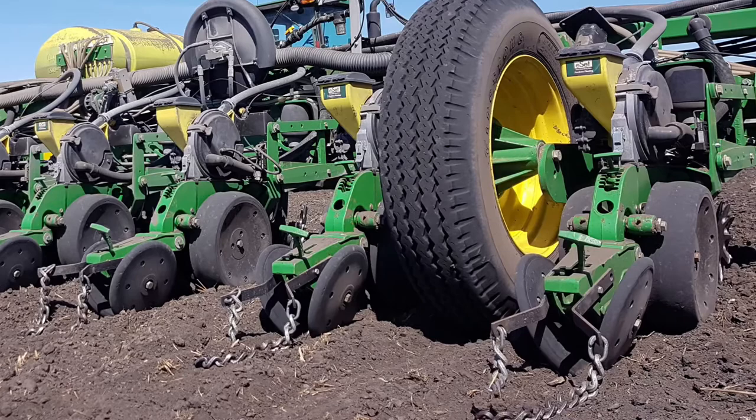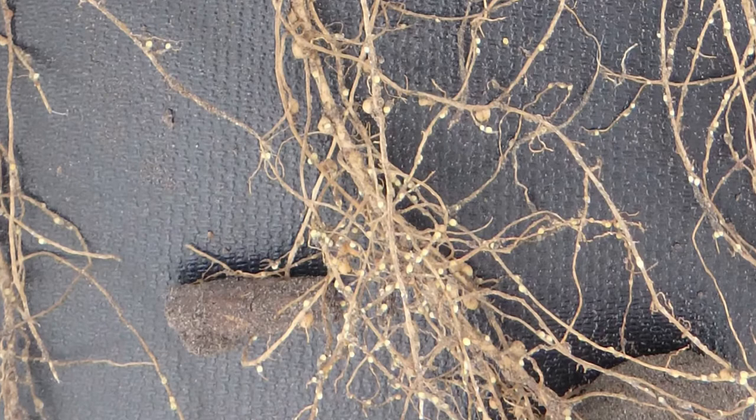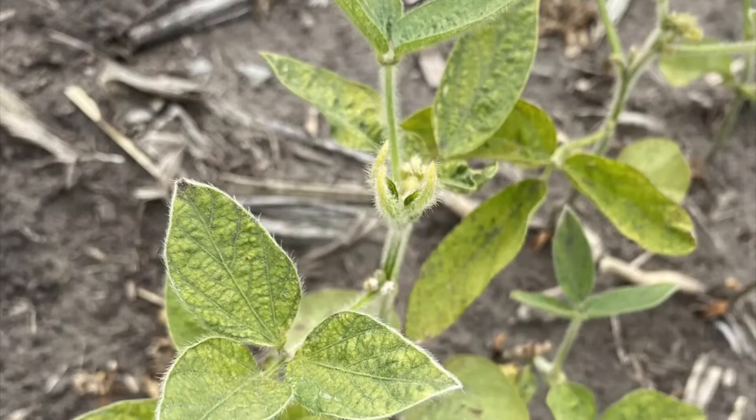Scout for SCN from late July through September until maturity. Gently dig up roots and examine them for small cysts. SCN is a silent yield robber since above-ground symptoms don't develop until cyst levels are quite high in the field, and once symptoms are visible above ground, up to 30 percent yield loss may already be occurring.